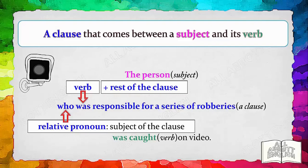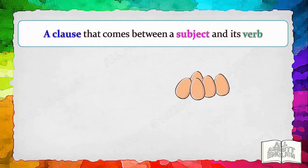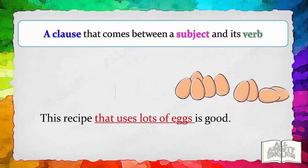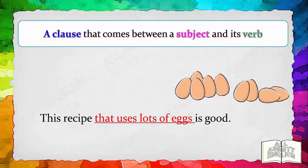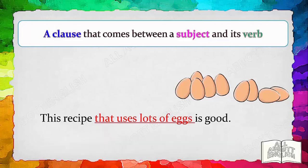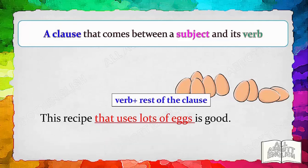Let's look at another example with a clause: 'This recipe that uses lots of eggs is good.' 'That uses lots of eggs' is a clause. Within the clause, there is a relative pronoun 'that,' which acts as a subject of the clause, and a verb 'uses,' followed by the rest of the predicate.